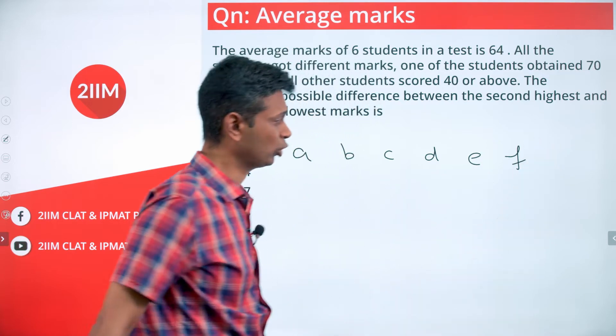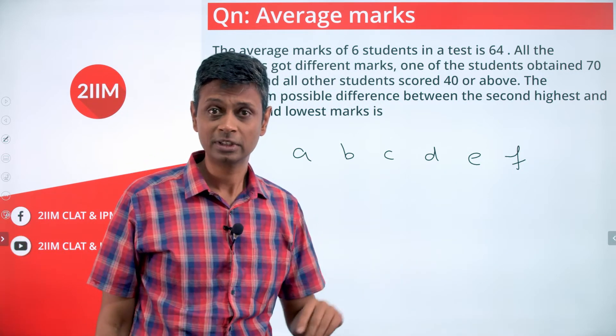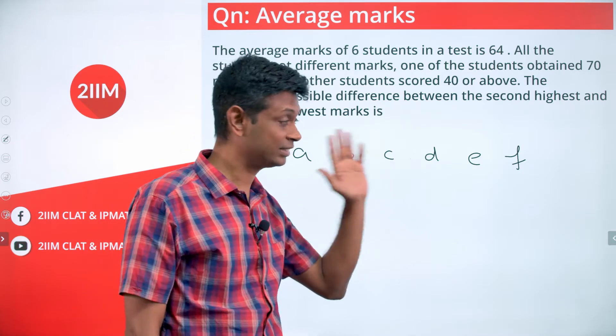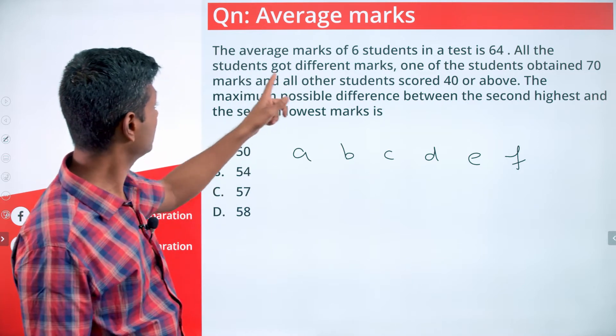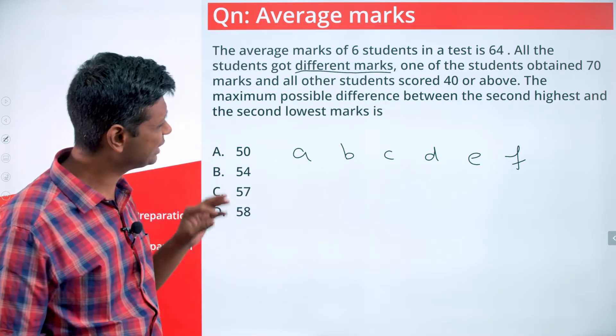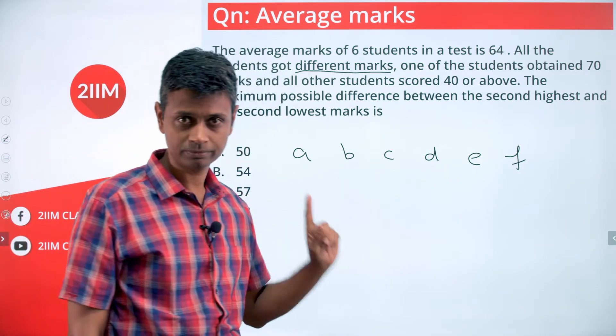Assume that they're all already in ascending order, and it's strictly ascending order: a less than b less than c less than d less than e less than f, because the marks are all different.